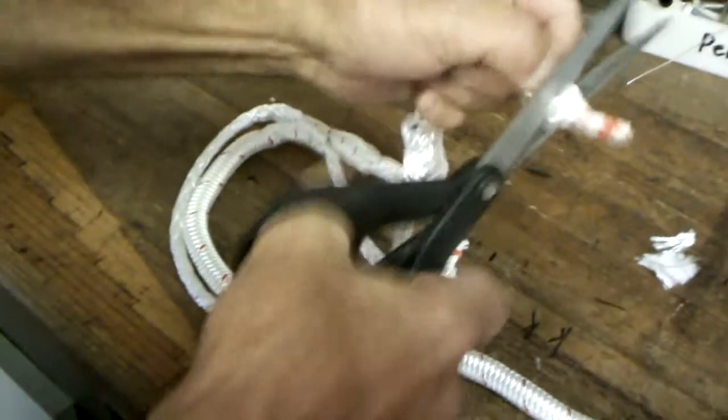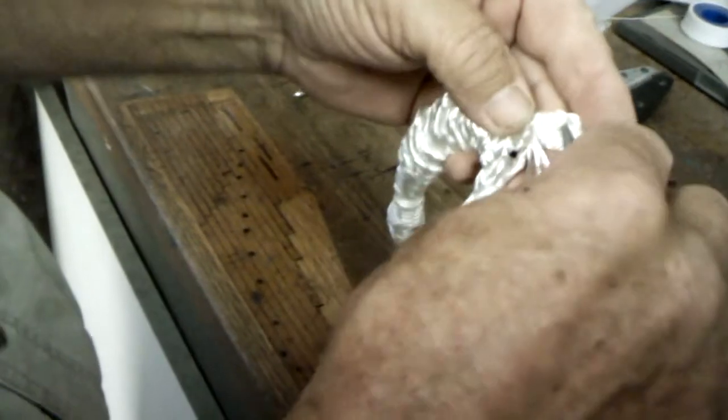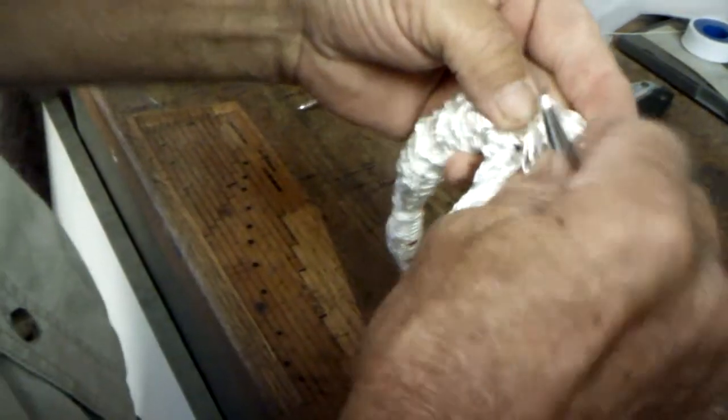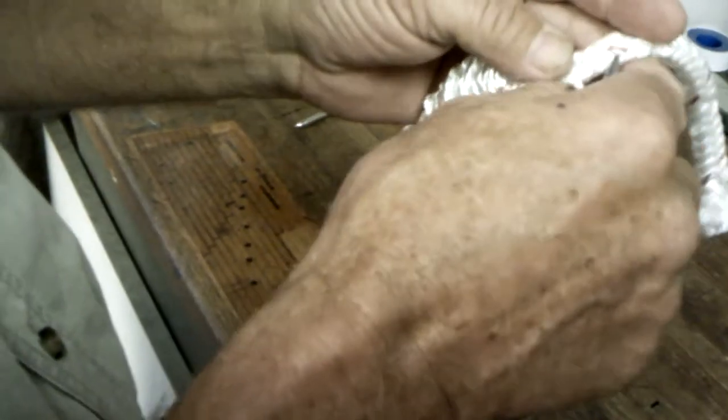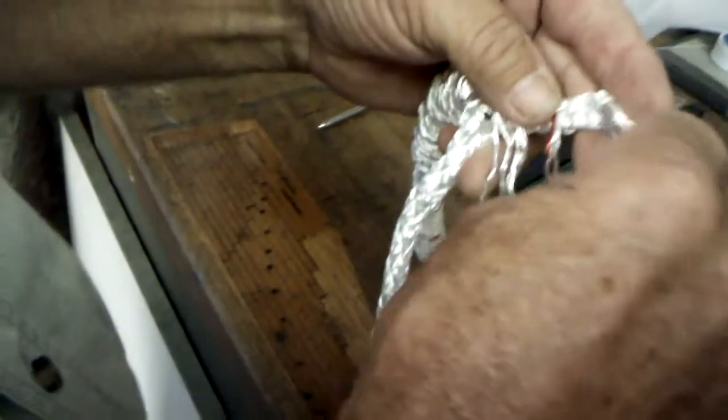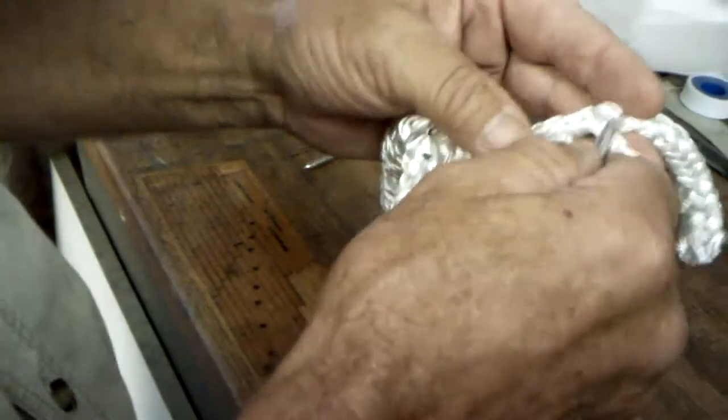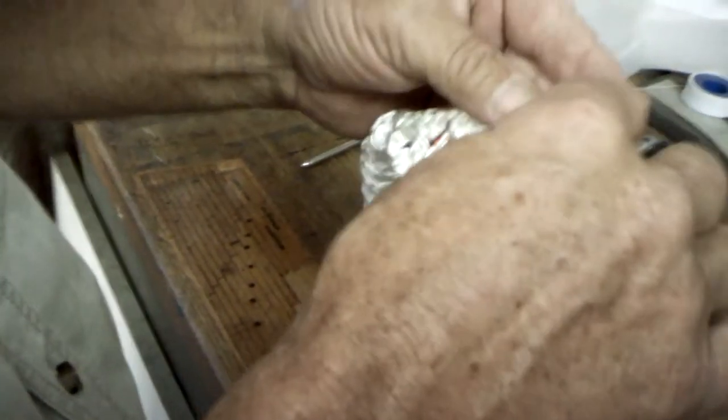Cut off that first mark you made. Pull that core all the way down to the jacket and pull three strands opposite of one another as you work up the jacket for a nice taper. I want to pull out 8 to 10, 8 to 12.